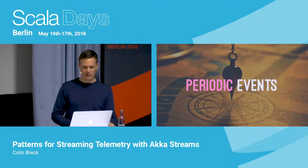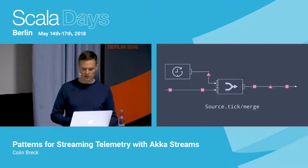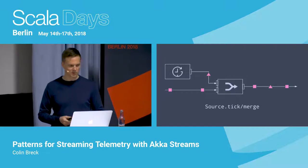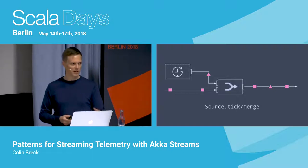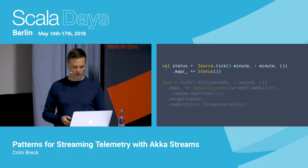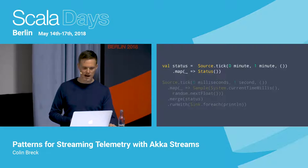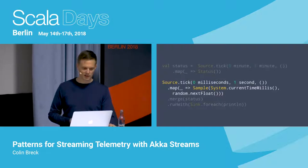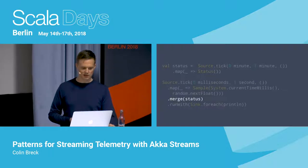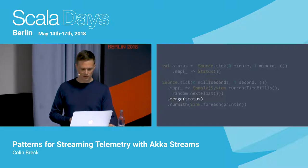Another pattern we saw in the motivating example is the need for periodic events — heartbeat messages, status messages, or pings. The way to do this with the Akka Streams API is to generate a source that emits those periodic messages and merge them with the rest of the stream. Here's an example: a source emits a status message once a minute, the main stream generates random samples once a second, and we simply merge them together.